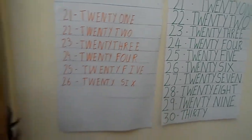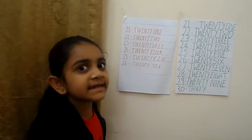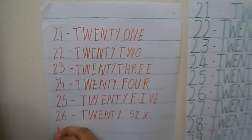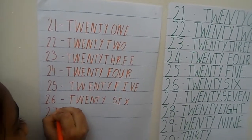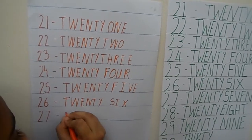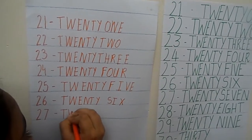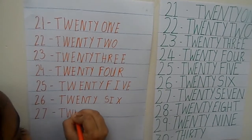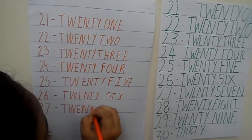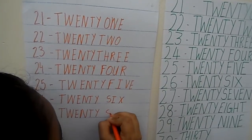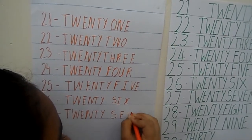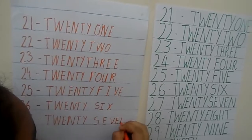Now let's see the next number. 27. So let's see how to write it. This is very easy. 2, then a 7. Now let's see the number name of 27: T, W, E, N, T, Y, S, E, V, E, N.